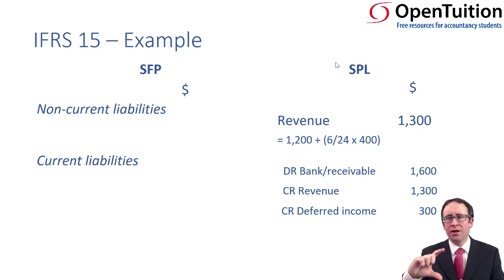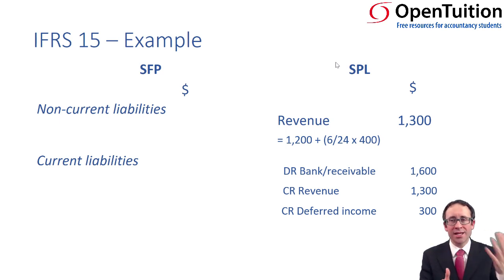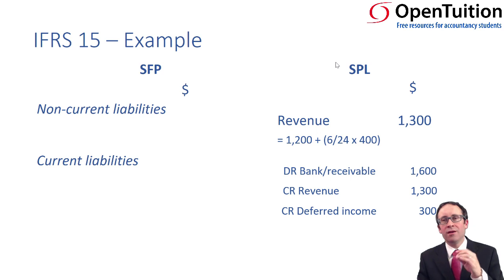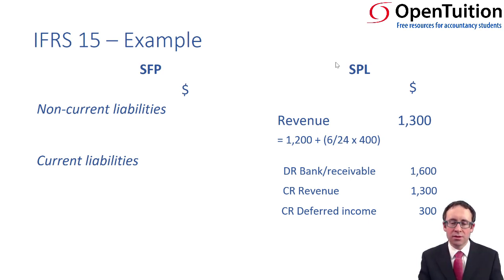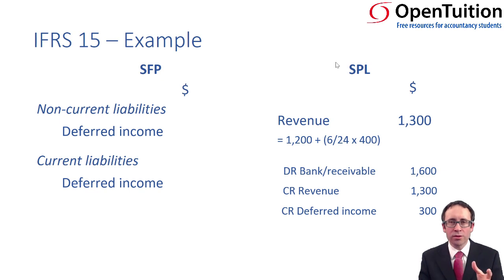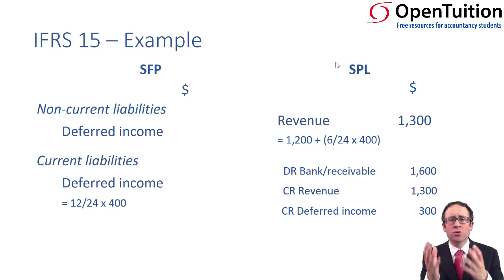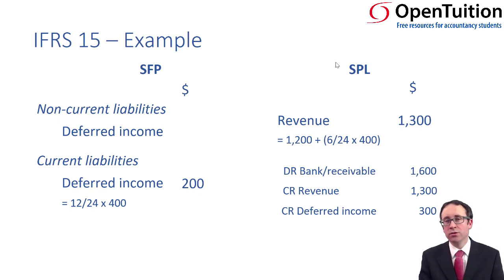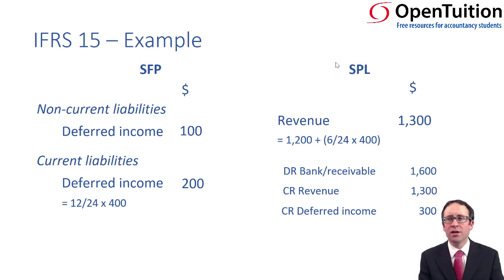There will be 12 months recognised next year, and then six months recognised in the period after that, because we have 18 months left on this 24-month contract — six have gone. That deferred income is a liability. In the exam, you can just record a deferred income liability of $300. But if you're looking for top marks, you need to split it between current and non-current. Current — due within 12 months — is 12/24ths of $400, which is $200. The non-current balancing figure is therefore $100, or alternatively 6/24ths of $400.